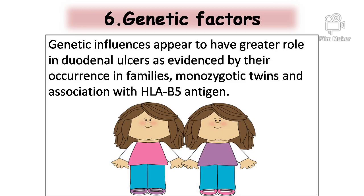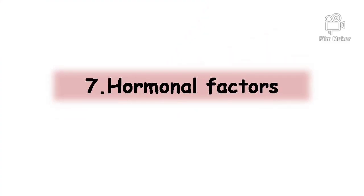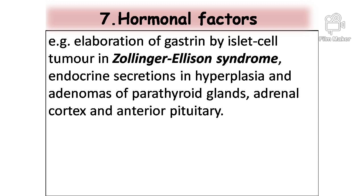This includes monozygotic twins. Hormonal factors: secretion of certain hormones by tumors is associated with peptic ulceration, for example, elaboration of gastrin by islet cell tumor in Zollinger-Ellison syndrome, endocrine secretions in hyperplasia and adenomas of parathyroid glands, adrenal cortex, and anterior pituitary.